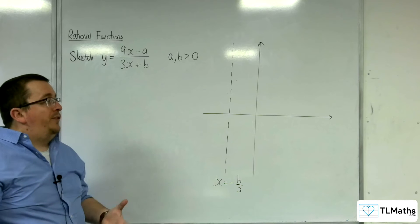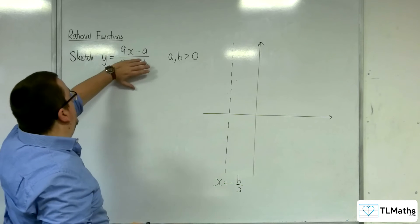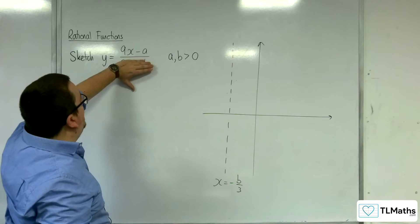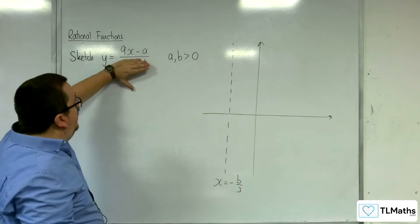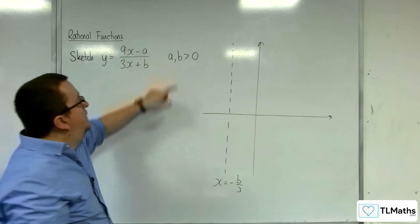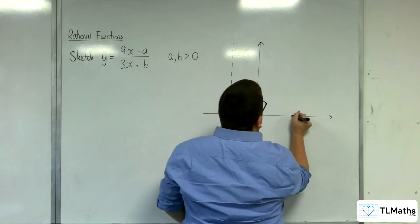Now, as for where it crosses the x-axis, that's where the numerator is 0. And so that would be a over 9, which we know is positive because a is positive. So a over 9 is definitely somewhere over here.